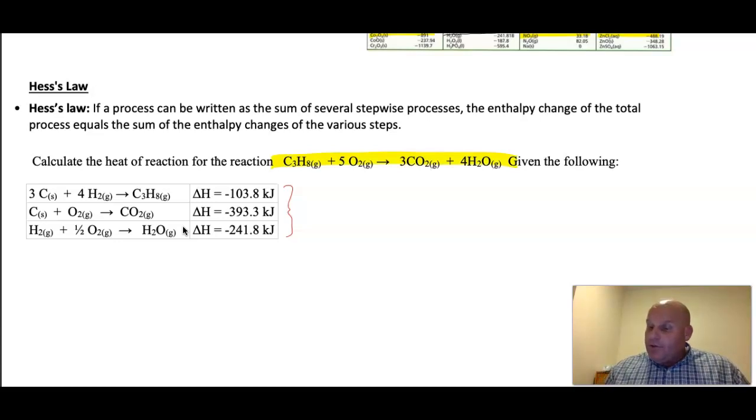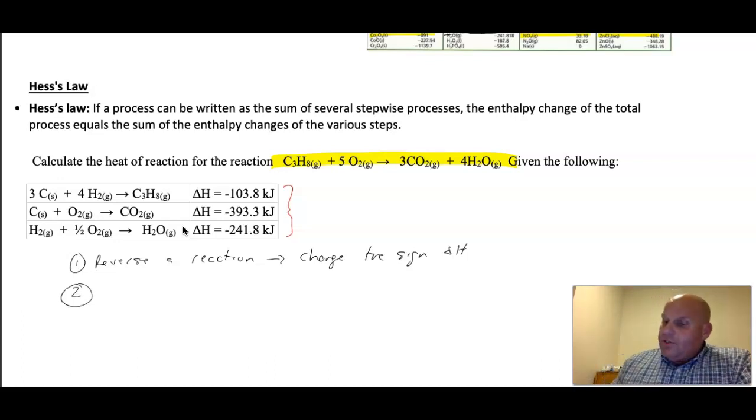Now, manipulate the steps. We are allowed to do two things. We can reverse a reaction. Now, if you reverse the reaction, you have to make sure you change the sign of delta H. At the end, we're just going to add these delta H values up, but as I manipulate these steps, I have to make sure I do the same thing to the delta H value, or when I go to add it, I'm not going to get the right answer. So you are allowed to turn a reaction around, and therefore, if you do that, you have to change the sign of delta H. You're also allowed to multiply by some coefficient. Again, if you do that, you must multiply the delta H by the same value.